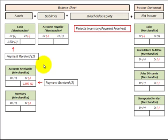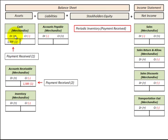We receive payment on an accounts receivable: we credit accounts receivable reducing it by $1,500, and the related debit entry is to cash — we receive and increase cash by $1,500.